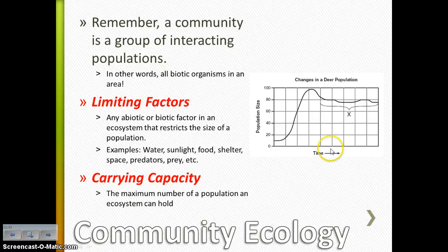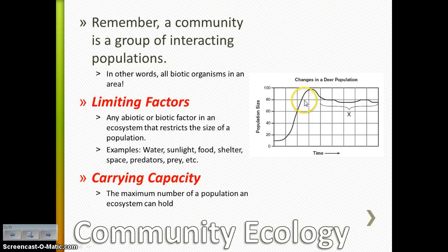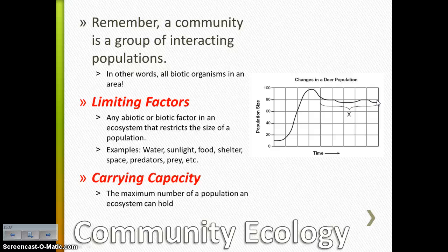So looking at our graph here, what do you think the carrying capacity of deer would be for this habitat or ecosystem? It's probably somewhere around 80 deer, because once you get past 80, you can see the population begins to decrease and then it sort of floats around right at that 80 deer mark, because then the limiting factors have kicked in and restricted the size of the population — you have reached your carrying capacity.